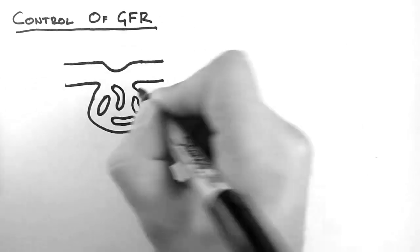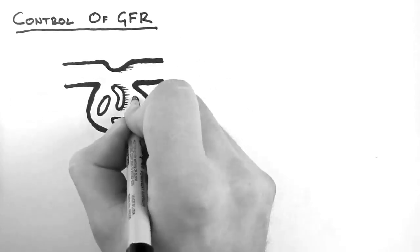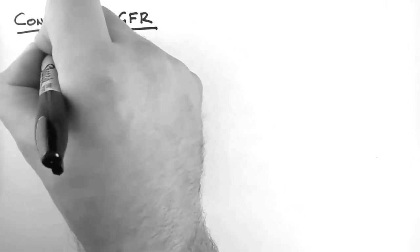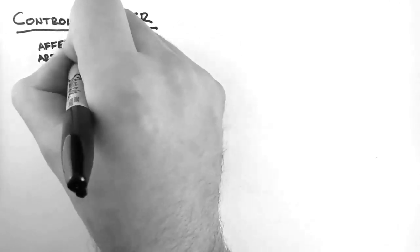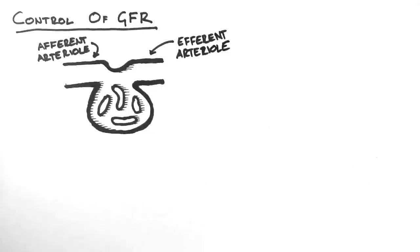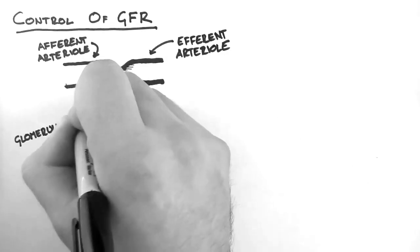So let's begin by looking at the normal situation. Here I have drawn a glomerulus without the Bowman's capsule and surrounding nephron. Here is the afferent arteriole and here is the efferent arteriole. And this is a network of capillaries known as the glomerulus.